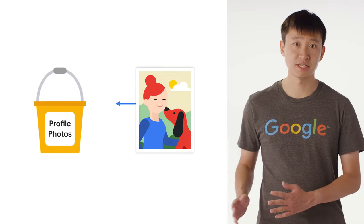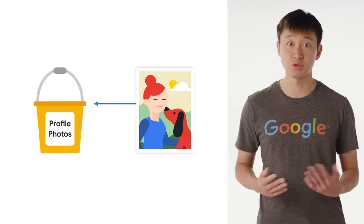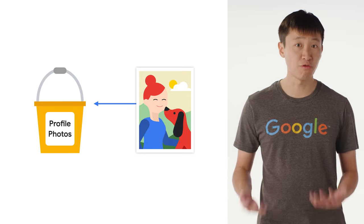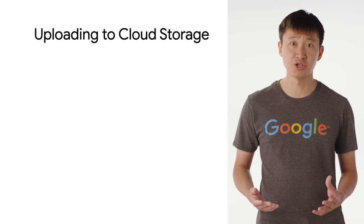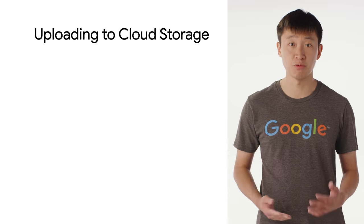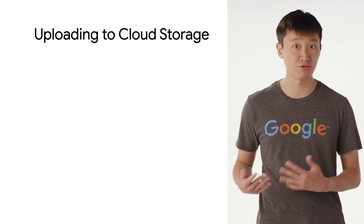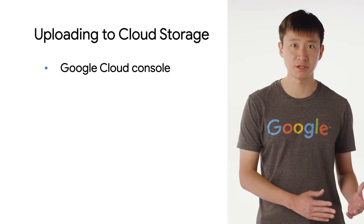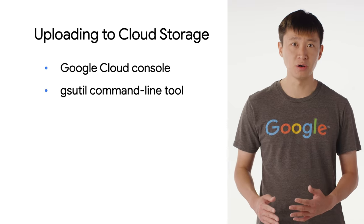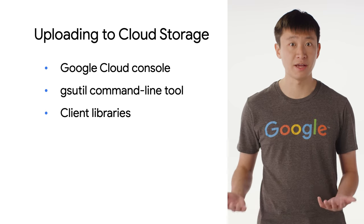Everything in Cloud Storage is organized into buckets and objects. Buckets are the basic containers that hold your data — you can use them to easily organize your data. For example, you could create a bucket called 'profile photos.' Objects are the individual pieces of data that you store in Cloud Storage; each profile photo would be an object. Cloud Storage offers several ways to upload or download objects using the Google Cloud console, the gsutil command line tool, or programmatically using our client libraries.